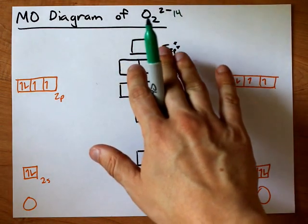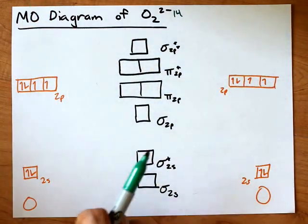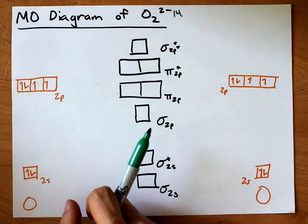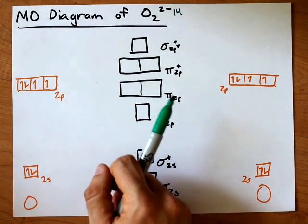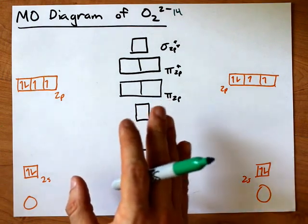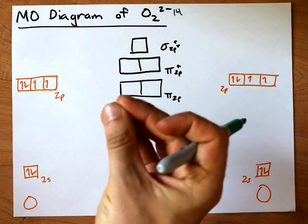Now O2 and F2 and Ne2 have a molecular orbital diagram where the sigma 2p bonding orbital is lower in energy than the pi 2p molecular bonding orbital. That's because oxygen, fluorine, and neon have more protons in the center.